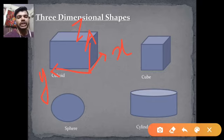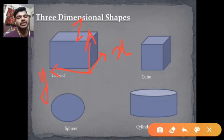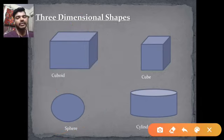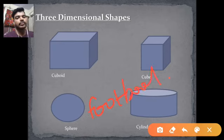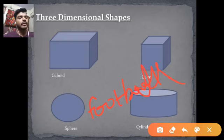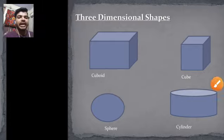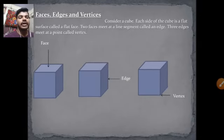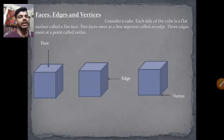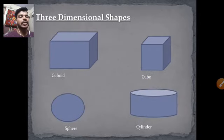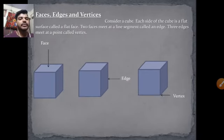Have you seen a ball or football? A football is a spherical shape — a sphere. A sphere is a three-dimensional shape. Three-dimensional shapes have face, edges, and vertices. Examples of three-dimensional shapes that have faces, edges, and vertices are the cuboid and cube.